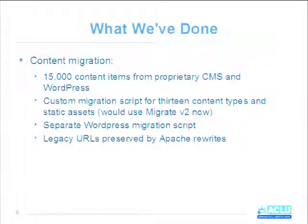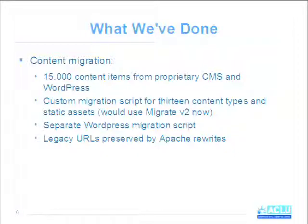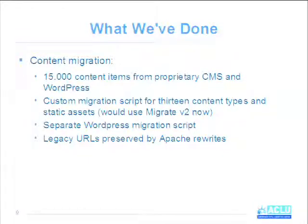These days, if I was doing this today, we would use version 2 of the migrate module, which makes this a lot easier — it gives you the ability to do a migration and then roll back, and it's much more easy to organize your code. But back then that was not available, so we did it custom. We also had a separate WordPress migration script. And of course, Jenny was showing you the ugly legacy URLs earlier. Fortunately they had a unique ID in them, so we were able to write Apache rewrites so that any URL stored in Google would redirect to the new URL on the site.